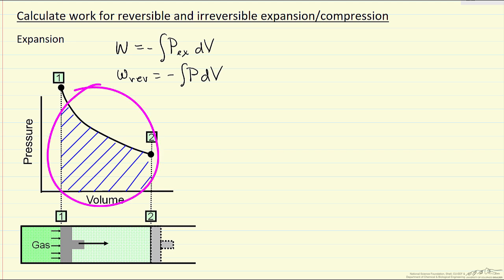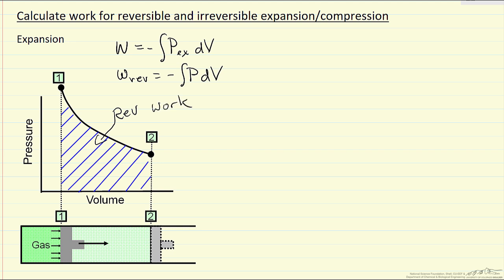That means the work is the area under the curve shown here crosshatched. This is reversible work; the area is proportional to the reversible work as we expand from point one to point two, and the piston moves from left to right.